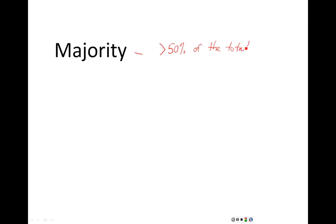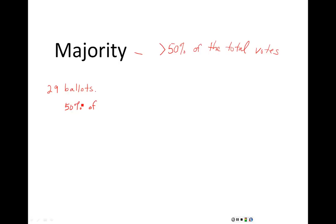Let's consider a situation. Suppose that we have an election and there are 29 ballots collected. If you want to have a majority of votes, what's the smallest number of votes that you would need to win this election? The first thing you want to do is figure out what 50% of the total ballots are — in this case, 50% of 29.